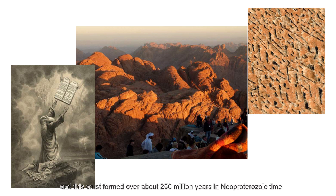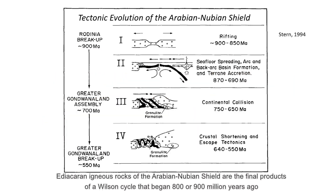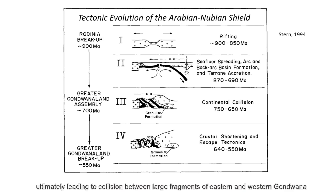Exposures of basement rocks around the Red Sea are known as the Arabian Nubian Shield, and this crust formed over about 250 million years in Neoproterozoic time. Ediacaran igneous rocks of the Arabian Nubian Shield are the final products of a Wilson cycle that began 800 or 900 million years ago, with rifting to open the Mozambique Ocean, followed by formation of new subduction zones and island arcs, ultimately leading to collision between large fragments of eastern and western Gondwana to form the supercontinent Greater Gondwana or Pannotia.